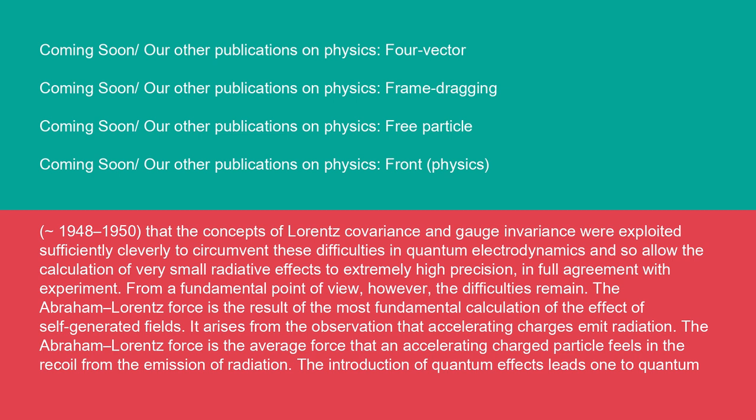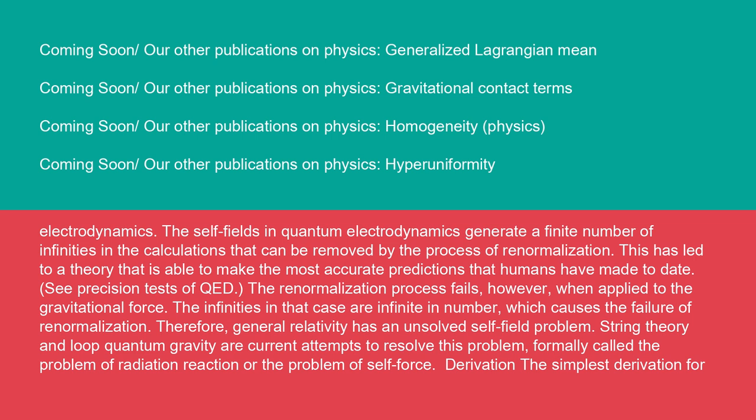The Abraham-Lorentz force is the result of the most fundamental calculation of the effect of self-generated fields. It arises from the observation that accelerating charges emit radiation. The Abraham-Lorentz force is the average force that an accelerating charged particle feels in the recoil from the emission of radiation. The introduction of quantum effects leads one to quantum electrodynamics. The self-fields in quantum electrodynamics generate a finite number of infinities in the calculations that can be removed by the process of renormalization. This has led to a theory that is able to make the most accurate predictions that humans have made to date. See precision tests of QED.